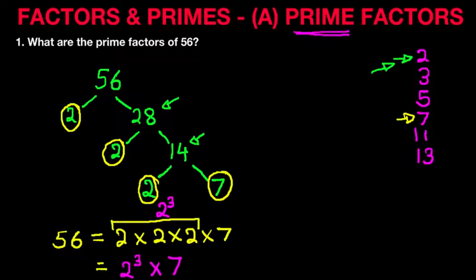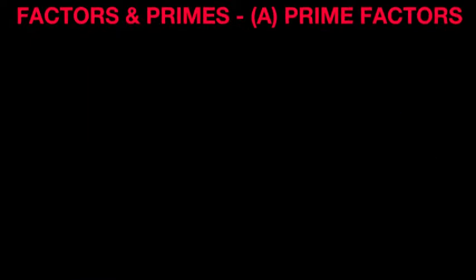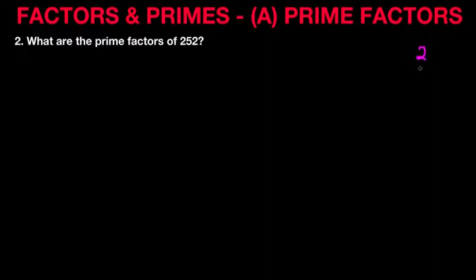And that is how we work out the prime factors of any number. So let's move on to our second example. What are the prime factors of the number 252? The principle is the same, so don't be frightened by large numbers. I always like to start by jotting down the prime numbers — 2, 3, 5, 7, 11, 13 — and you can keep going. It's also good practice because it helps you memorize the first few prime numbers.